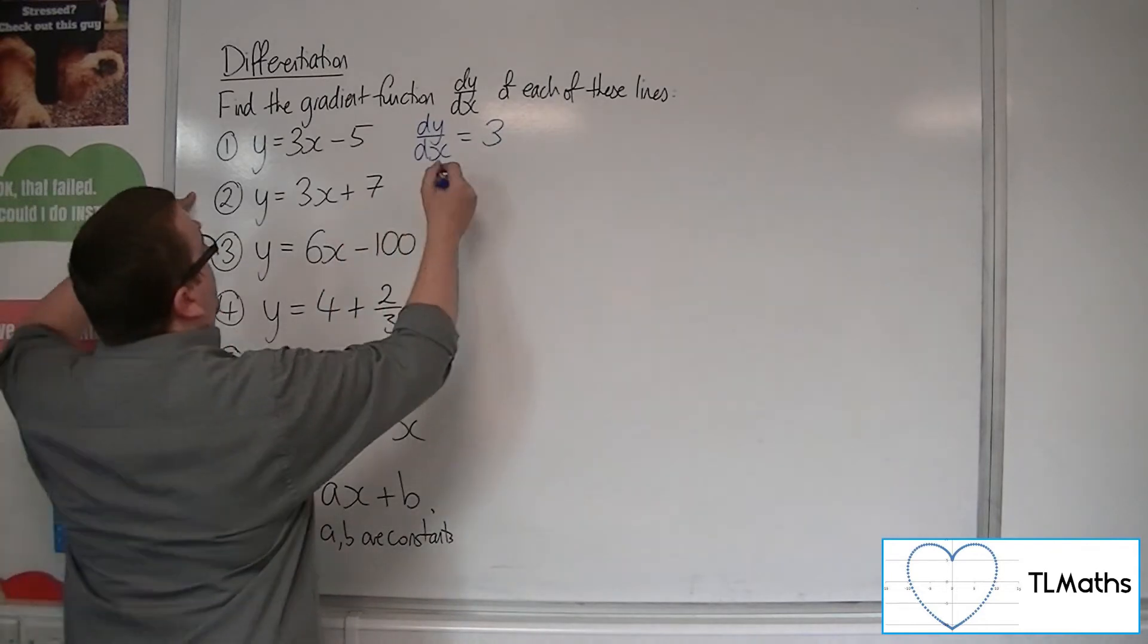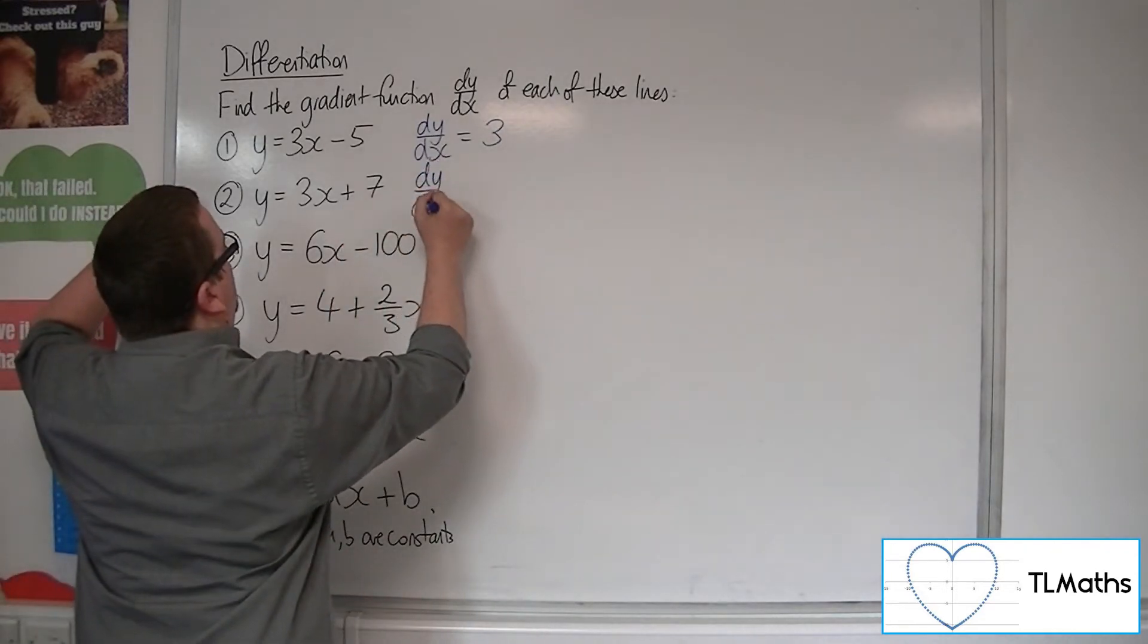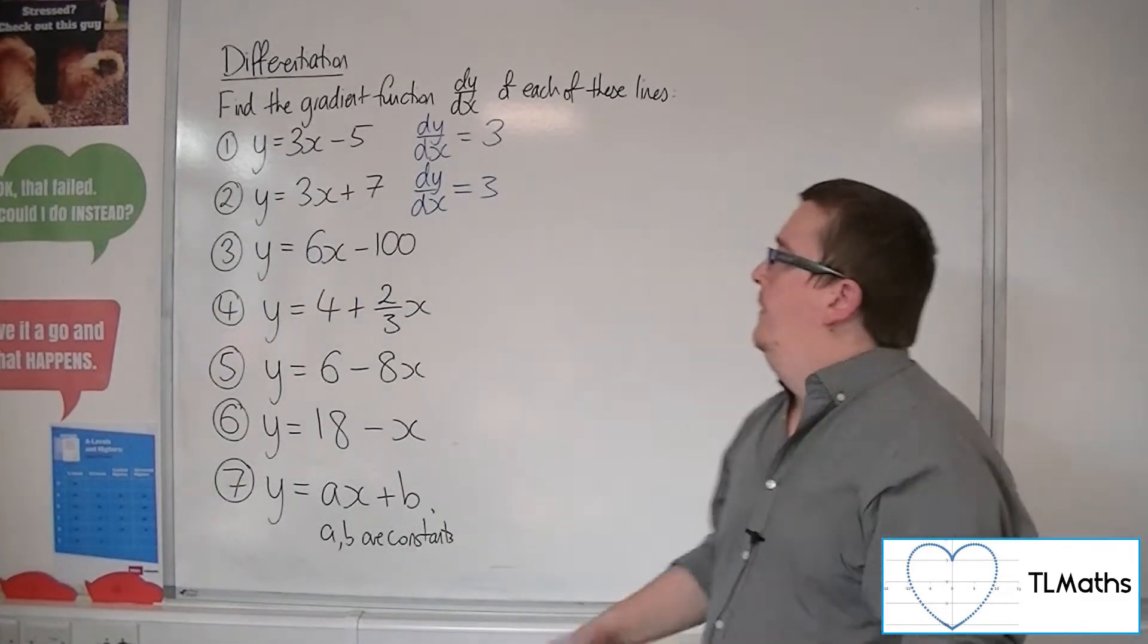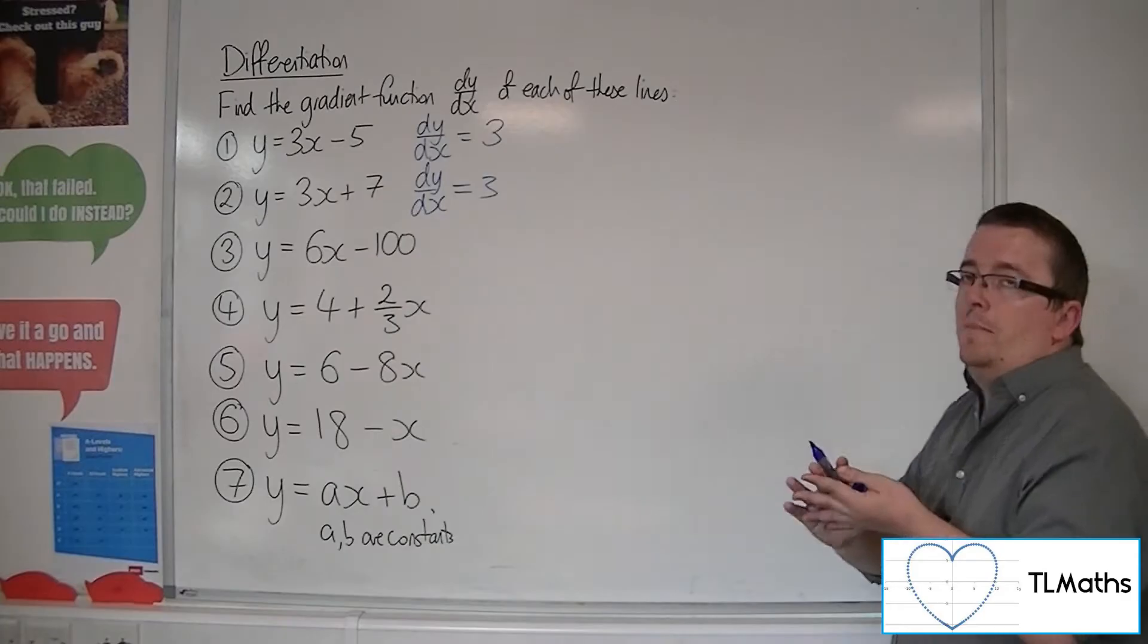And in number 2's case, dy by dx is also going to be 3. Because the gradient in both cases is 3, the minus 5 and the 7 don't make any difference.